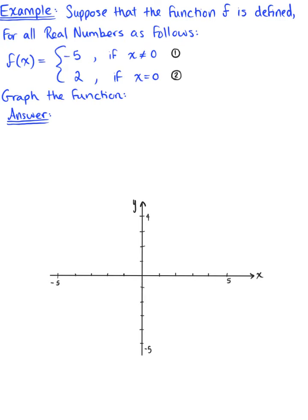We're being asked to graph this function. We have two different equations on different parts of our domain. Equation 1 tells us that y, or f(x), is equal to negative 5, such that x is any real number except 0. So x is an element of the interval from negative infinity to 0, united with the interval from 0 to infinity.